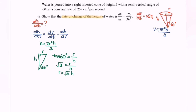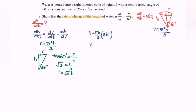Next, substitute r into the formula. So V equals πh over 3 times (√3·h)², which gives 3h². Simplifying, V equals πh³. Next, we differentiate with respect to h, giving dV/dh equals 3πh².